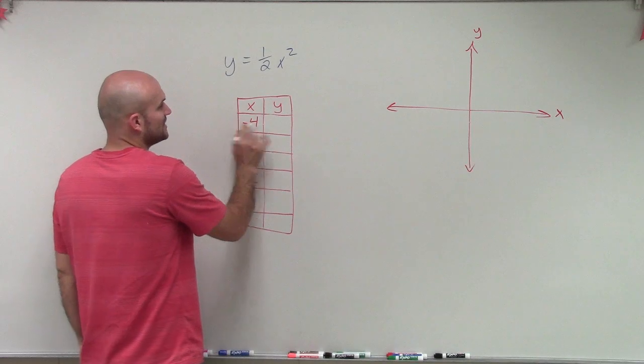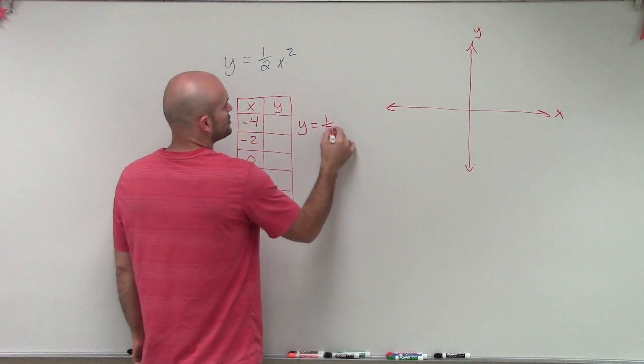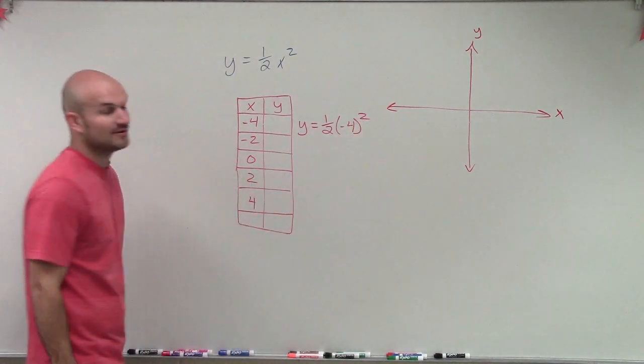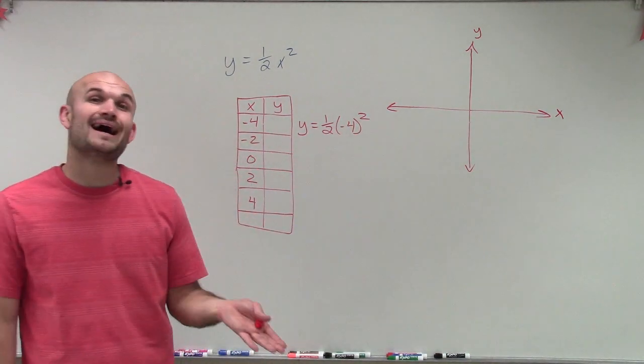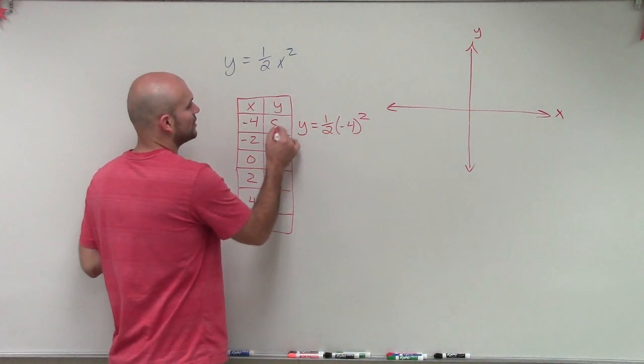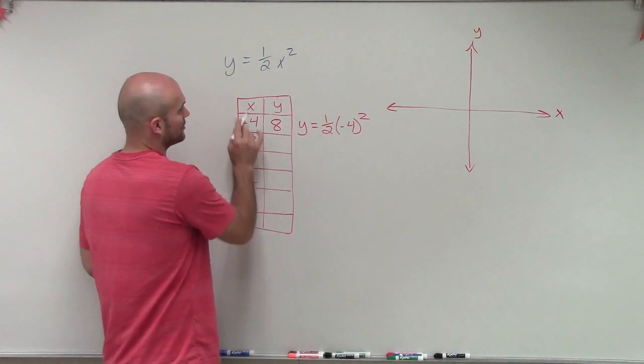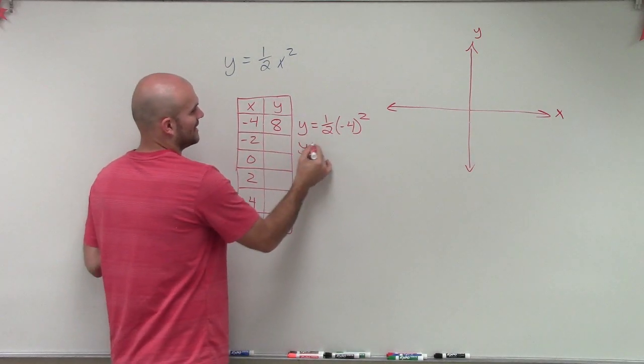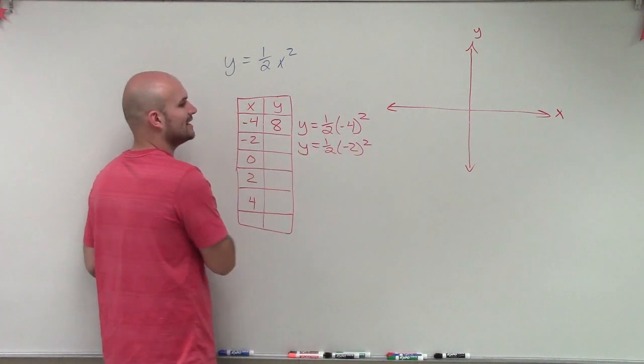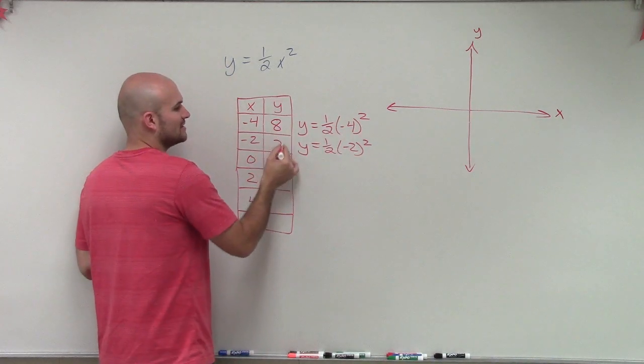So if I know my x is going to be equal to negative 4, I now need to determine what the y-coordinate is going to be. So what I do is I plug in the x-coordinate, negative 4, in from there. Now, negative 4 squared is going to be a positive 16. Positive 16 times 1 half is going to equal 8. Therefore, y equals 8. So now I go to negative 2. So I write y equals 1 half times negative 2 squared. Well, negative 2 squared is 4. And then 4 times 1 half is 2.